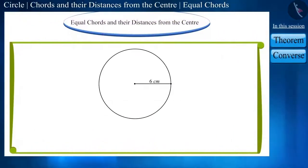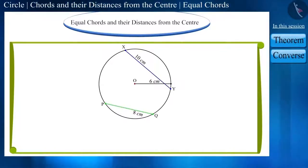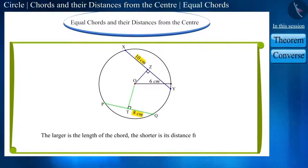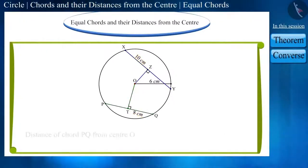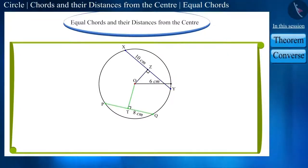Draw a circle whose center is O and radius is 6 cm. Now, let's draw two chords PQ and XY in it, whose lengths are 8 cm and 10 cm respectively. What can we tell about the distance of these two chords from the center? These chords are not equal. We know that the larger the length of a chord, the shorter is its distance from the center. Chord PQ is at a greater distance from the center O than chord XY. We can check this by drawing perpendiculars from the center on both these chords.